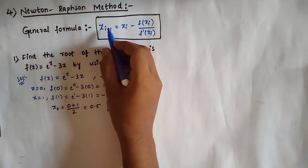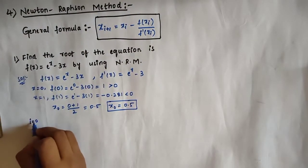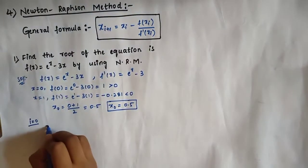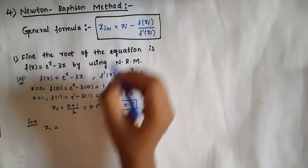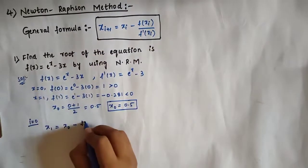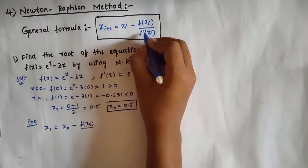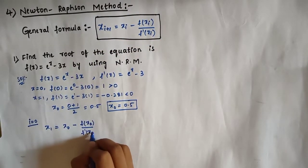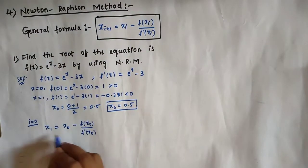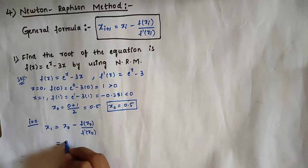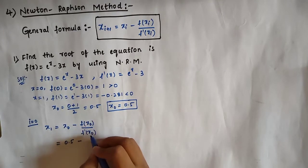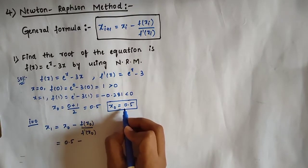Now we put i = 0 in the Newton-Raphson formula, giving x₁ = x₀ minus f(x₀) divided by f'(x₀). We substitute x₀ = 0.5, so we need to evaluate f(x₀) and f'(x₀) by putting 0.5 into the f(x) and f'(x) equations.